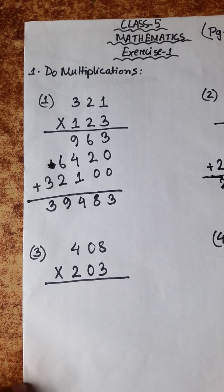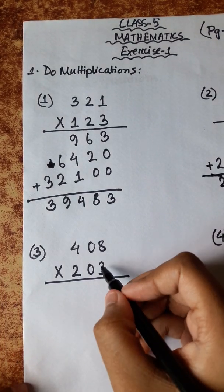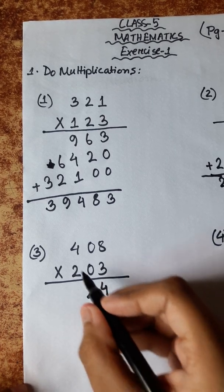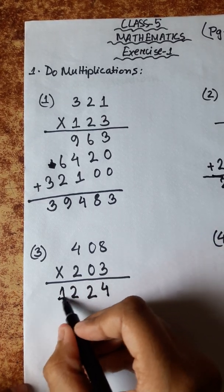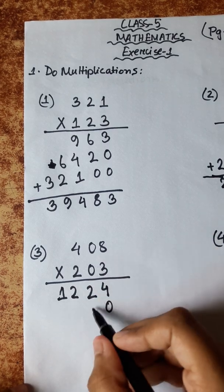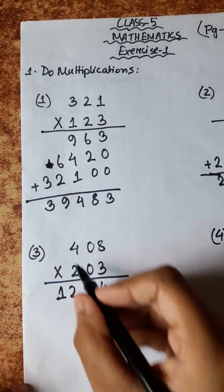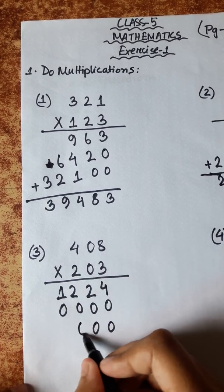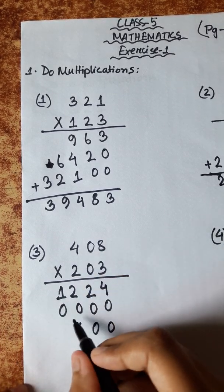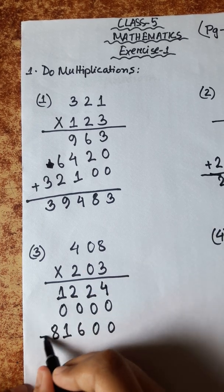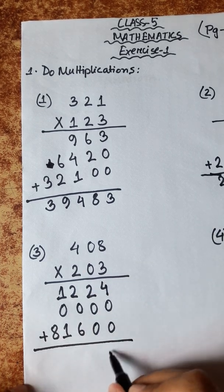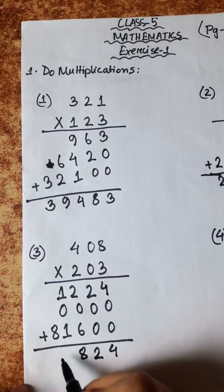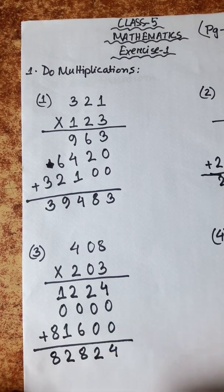Problem Number 3: 408 × 203. 8 3s are 24, carry 2. 8 0s are 0. 0 0s are 0. 4 0s are 0. 8 2s are 16, carry 1. 2 0s are 0 plus 1 is 1. 4 2s are 8. Result: 4, 2, 6 plus 2 is 8. 1 plus 1 is 2. Final answer: 82,824.